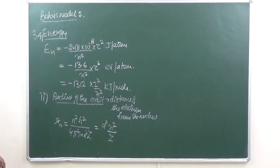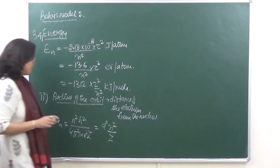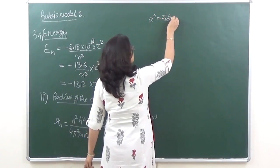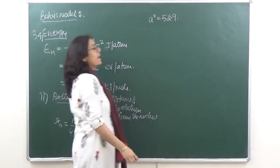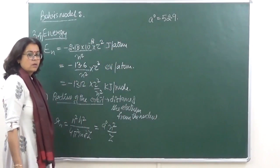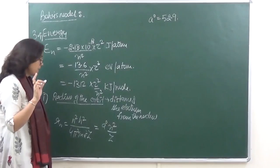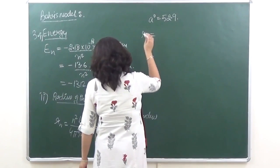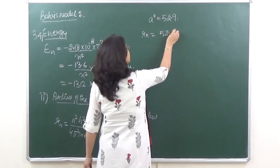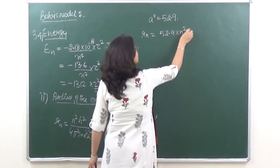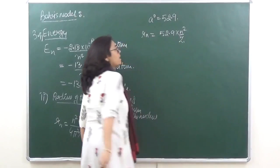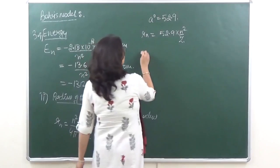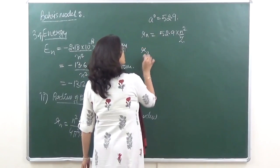The value of a naught calculated over here was equal to 52.9 picometers for the first orbit. So rn that is equal to 52.9 into n square upon z. For example, we want to calculate radius for the third orbit.